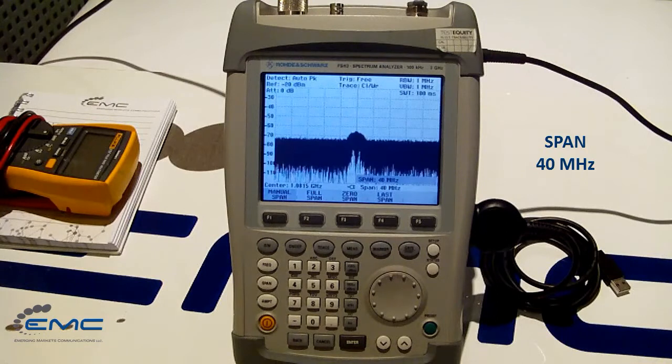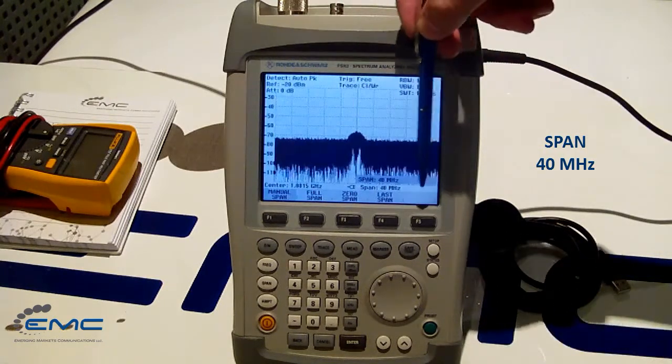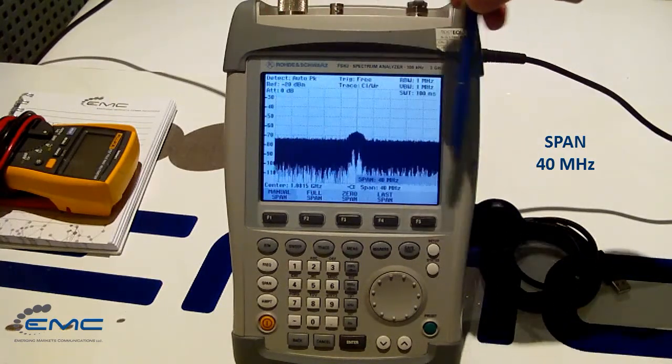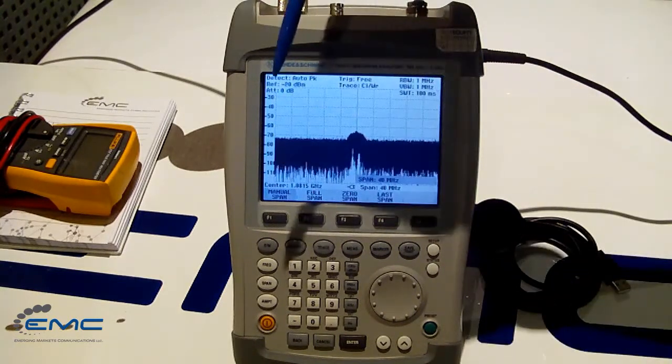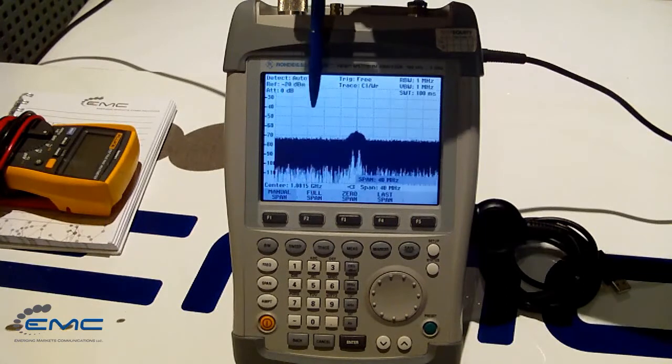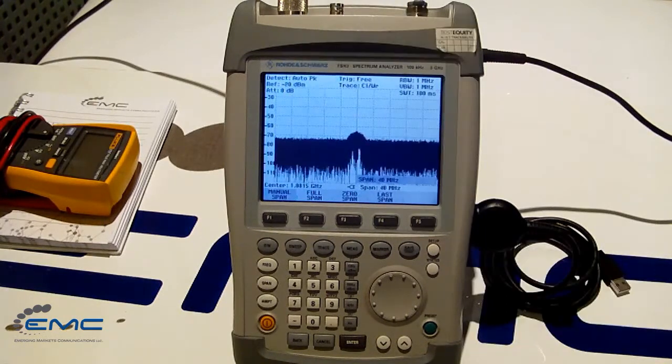We can also say that our X-axis scale has 40 MHz range from here to here, which is 4 MHz only per division, for example.